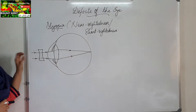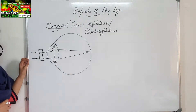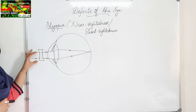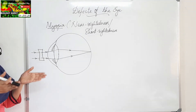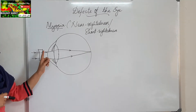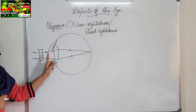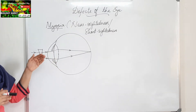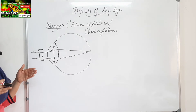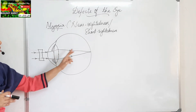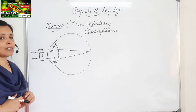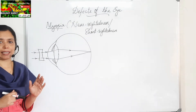So first, this defect is rectified by using a concave lens. Once the light rays pass through the concave lens, divergence of the rays takes place. These diverged rays fall on the convex lens of our eye, and as a result, after passing through our eye lens, it converges and is able to fall on the retina. So this is myopia or near-sightedness.